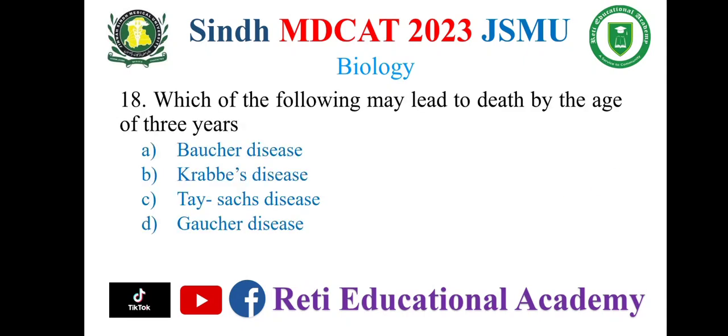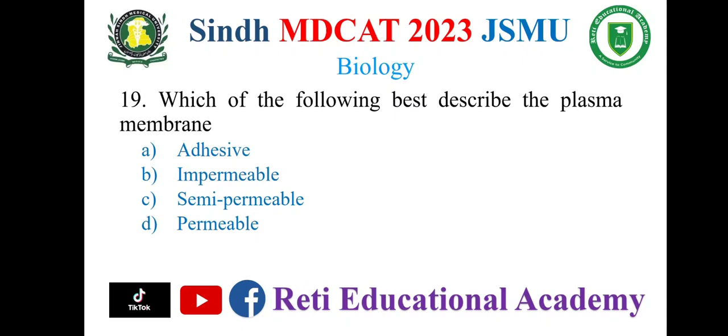Question number 18. Which of the following may lead to death by the age of 3 years? A. Gaucher disease, B. Krabbe disease, C. Tay-Sachs disease, D. Gaucher disease. And the correct option is C. Tay-Sachs disease.